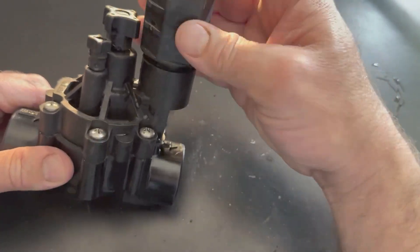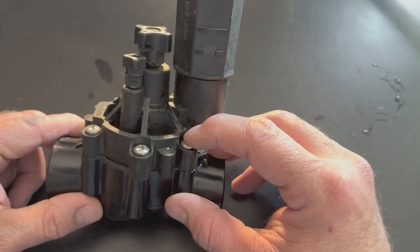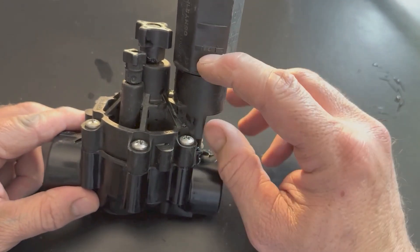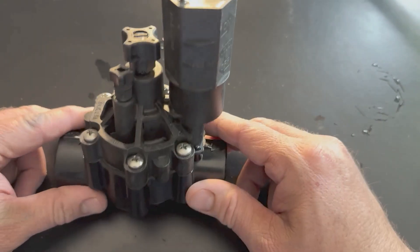The next step would be put your solenoid back on. A lot of times if I've got a problem with a valve, what I'll do is I'll buy a whole new valve and then put a new solenoid, new top, and new diaphragm to rebuild that valve.